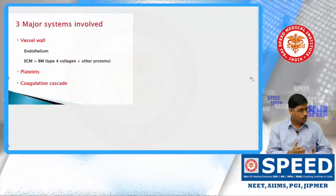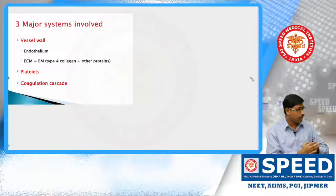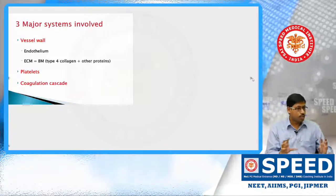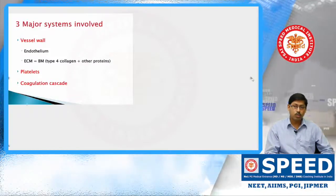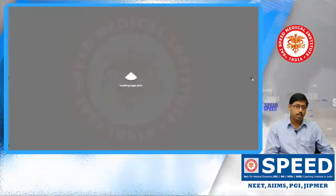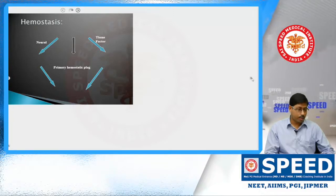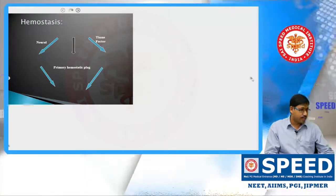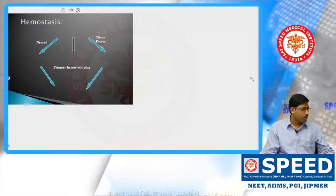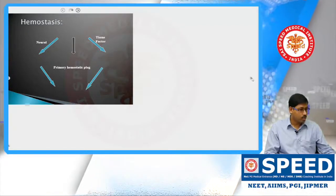Three major systems are involved, but coagulation actually occurs through the interplay of the vessel wall along with blood components — that is, the platelets as well as the coagulation proteins. With that we go into the hemostasis systems. Hemostasis occurs whenever there is a breach in the blood vessels; there occurs a neural response that is vasoconstriction, due to release of epinephrine and related factors.